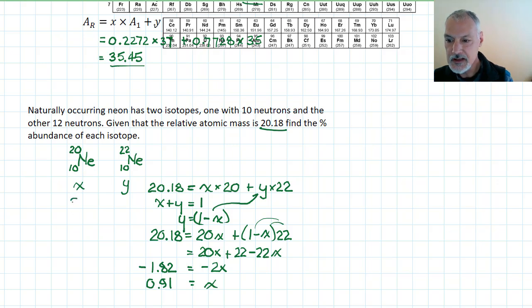That tells me then that 91% of the time neon comes in this variety and the remaining 9% of the time it comes in this variety. And that's not too surprising as this number is fairly close to 20, which is the most prevalent form of neon.